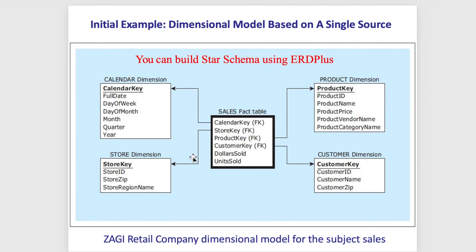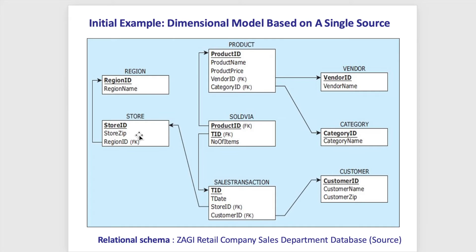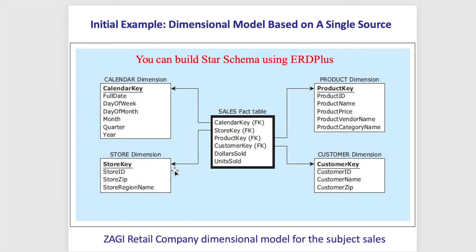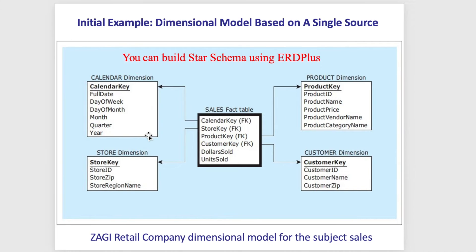Similarly, the store dimension is the result of joining the store table with the region table, because we may want to see the sale for each region, such as Chicagoland. That is why we join these two tables to add the store region name to the store dimension. For the calendar dimension, date-related analysis is one of the most common types, such as analyzing sales results across months or quarters of the year, and almost every star schema includes a date dimension.